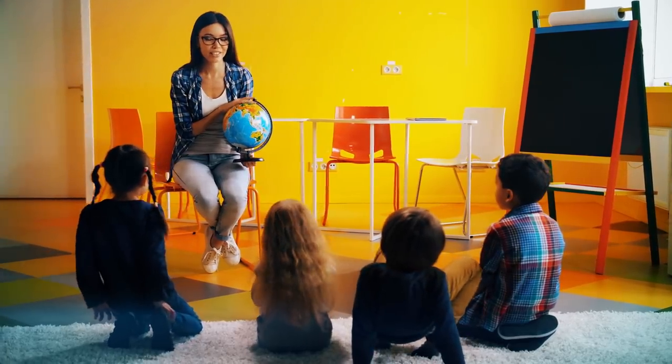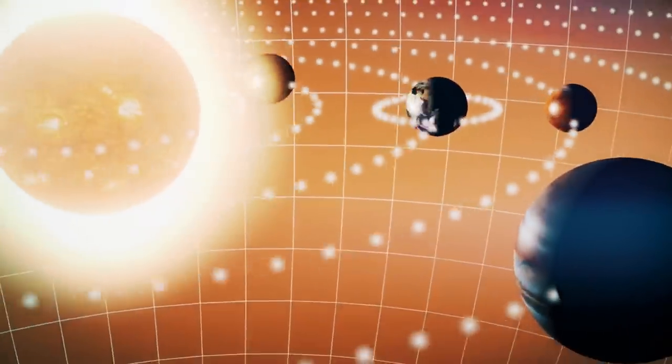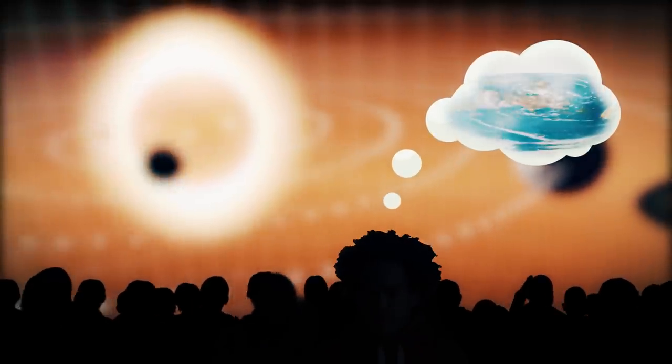Starting in elementary school, we've all been taught that the Earth is a globe. The moon orbits around the Earth, the Earth around the sun, and so on. There are some people who don't believe this, though.